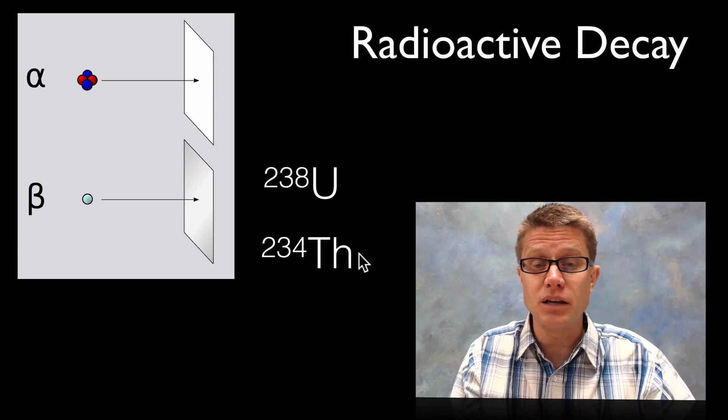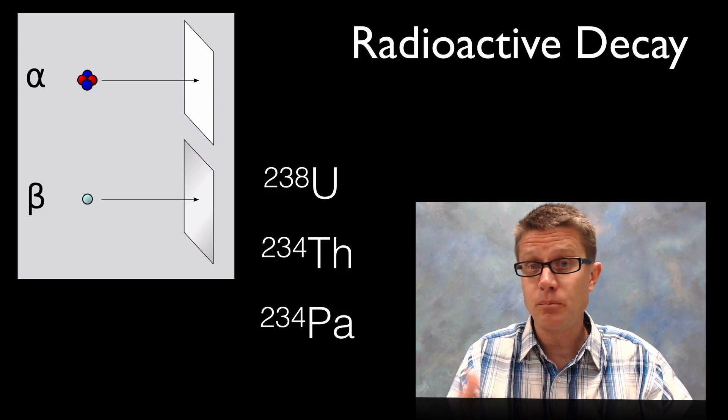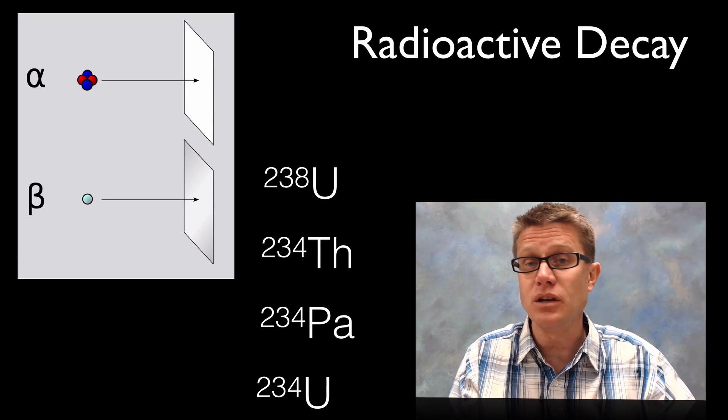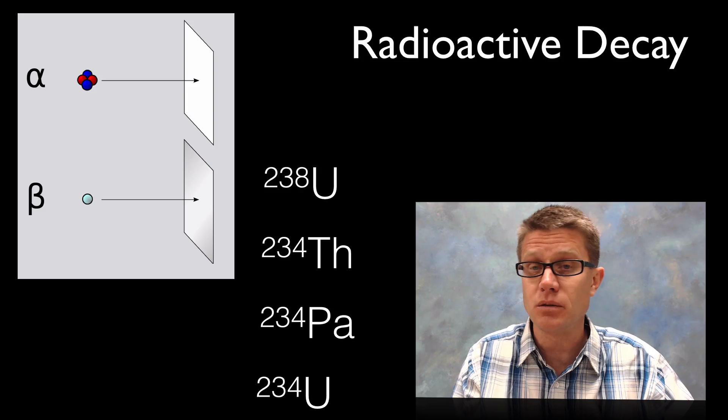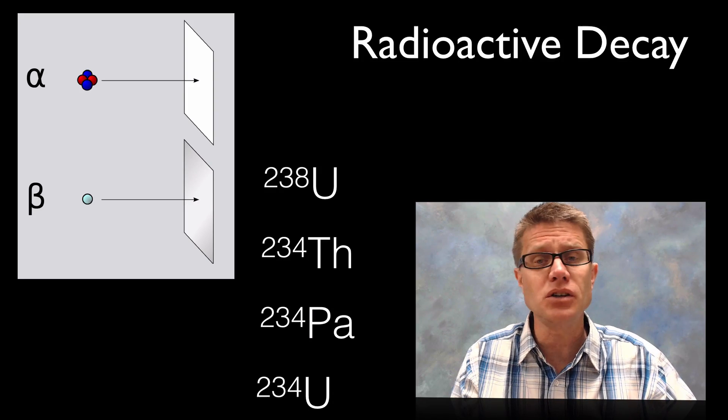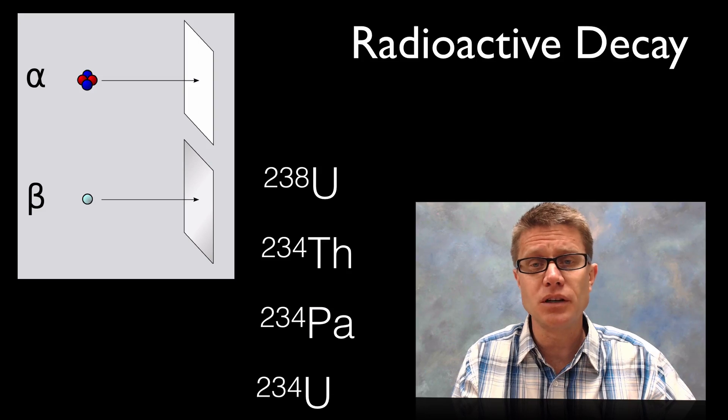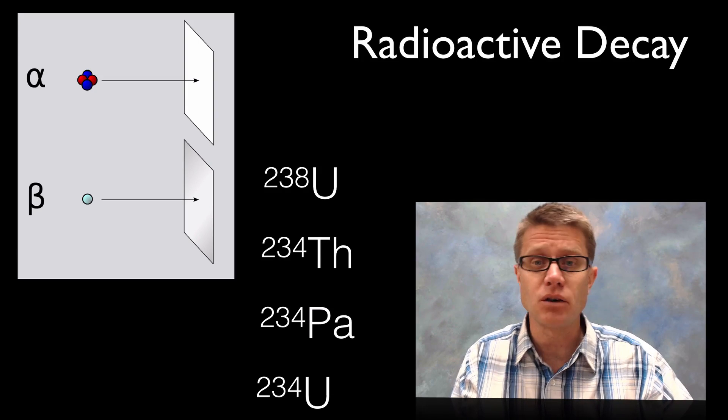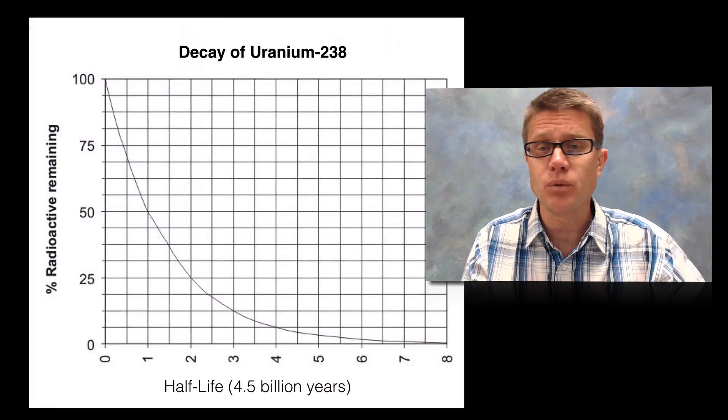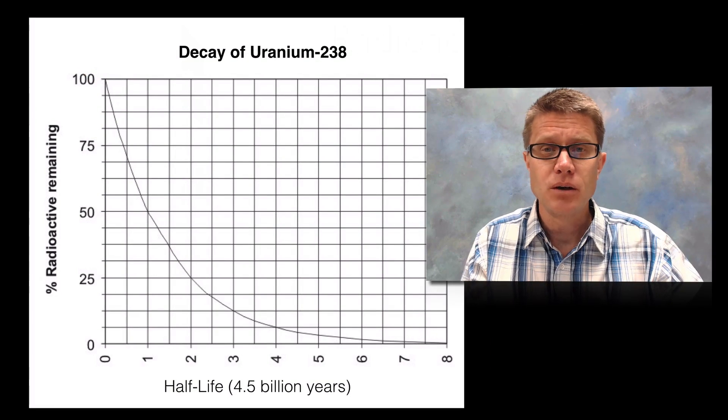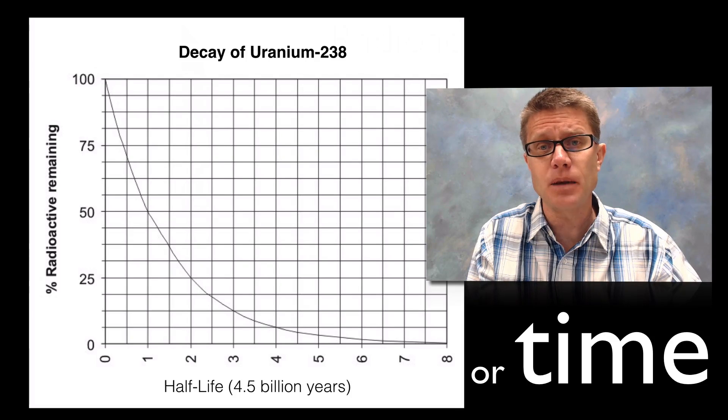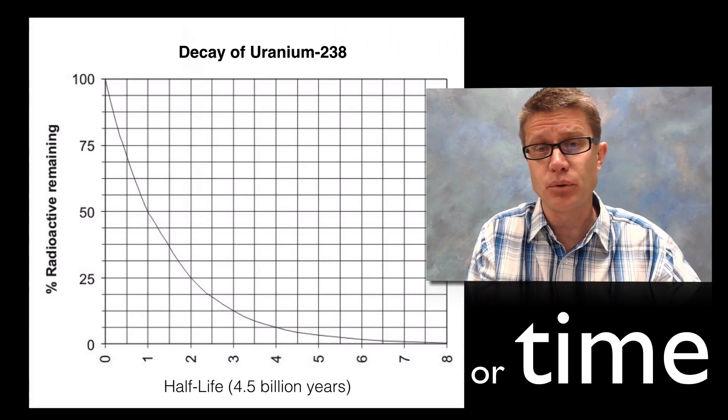It could undergo then beta decay. So we lose a beta particle and it becomes protactinium-234. It could lose another beta particle and it could become uranium-234. And so each of these have a probability of occurring and that probability is going to be in the atom itself. And so if we take a sample of 238, we can create a curve of what is called its half life, which is the ability for half of the atoms in that sample to decay or to break down.